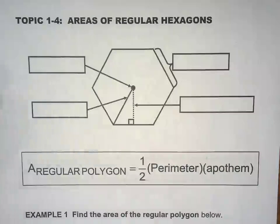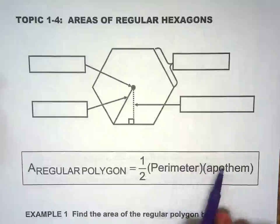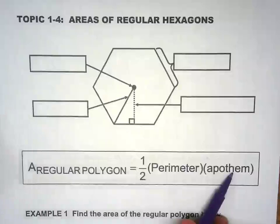We're finding the area of a regular hexagon. We're still using the super-duper-awesome formula: perimeter times apothem divided by two, or a half of perimeter times apothem.